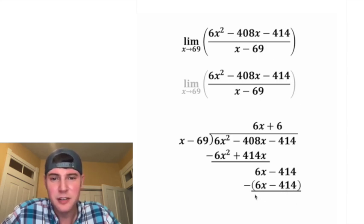And now we want to subtract this from this. Well, this negative will distribute to both terms, making the first one negative and the second one positive. These cancel and these cancel, so we're just left with 0. So the answer to this divided by this is 6x plus 6.